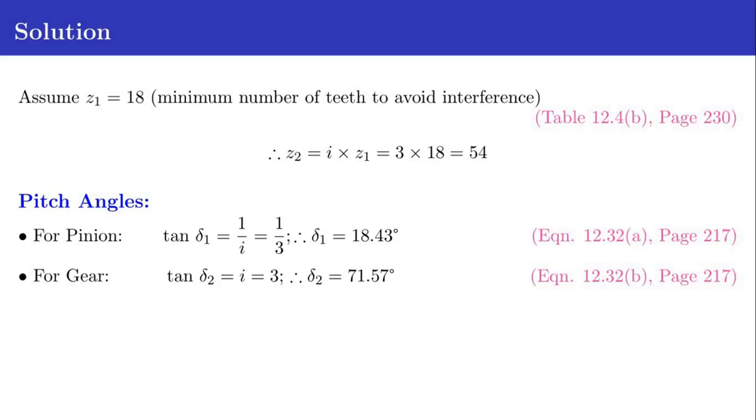We assume Z1, the number of teeth in pinion as 18, which is the minimum number of teeth to avoid interference. This value can be obtained from table 12.4B in page number 230. The number of teeth in gear Z2 equals i times Z1, that is 3 times 18 equals 54.